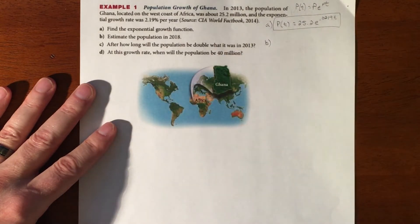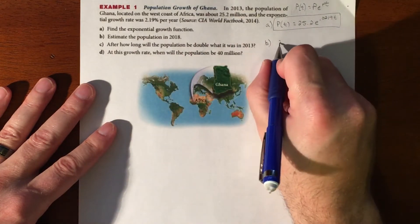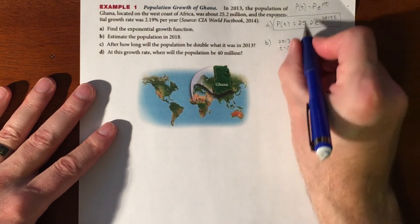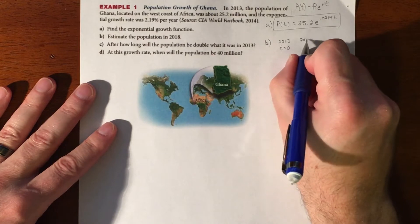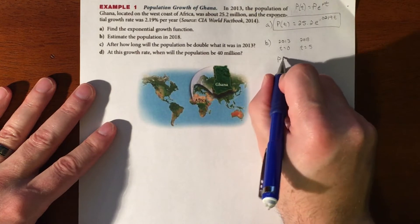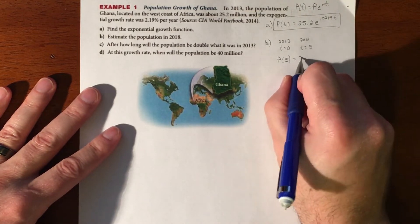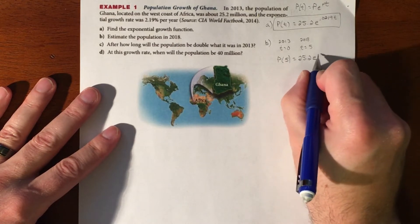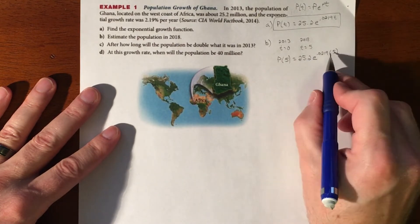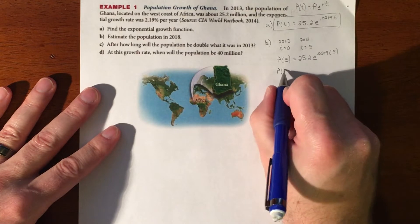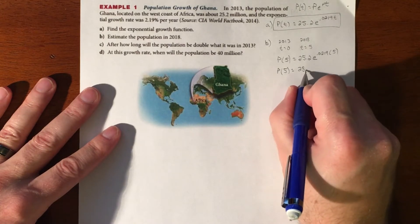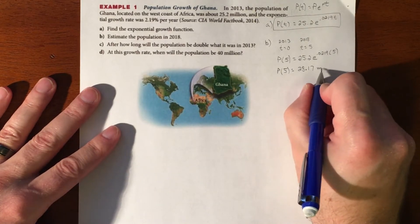So the second one, they wanted to know what's the population in 2018. Well, if 2013 is our T equals 0, it's our initial population what everything is based on. 2018 is going to be 5 years later. So we are going to do P of 5. So 25.2 E to the 0.0219 times 5. We're just going to plug that right into the calculator. And our population five years after 2013 is going to be roughly 28.17 million.